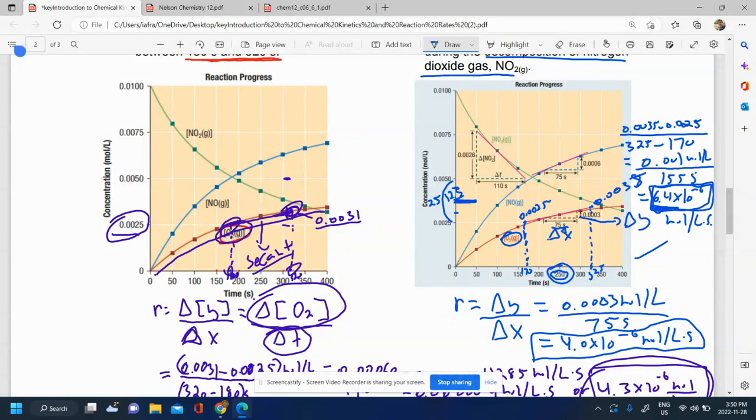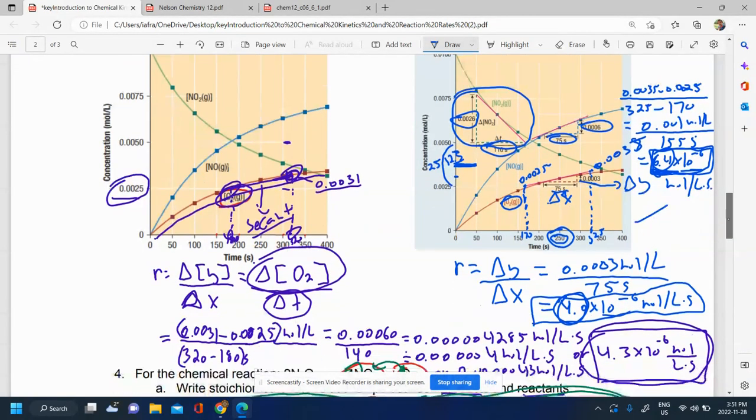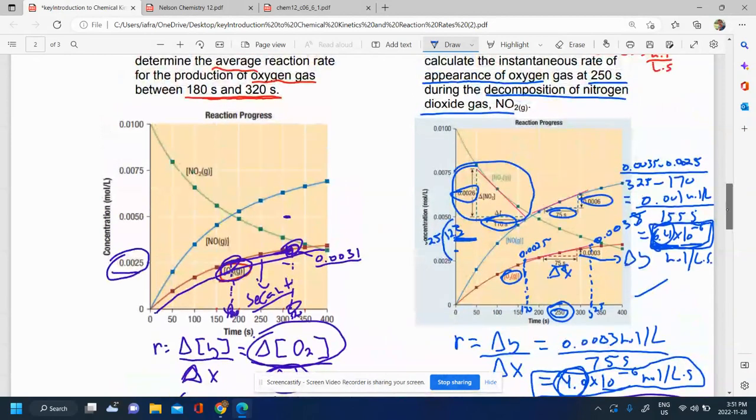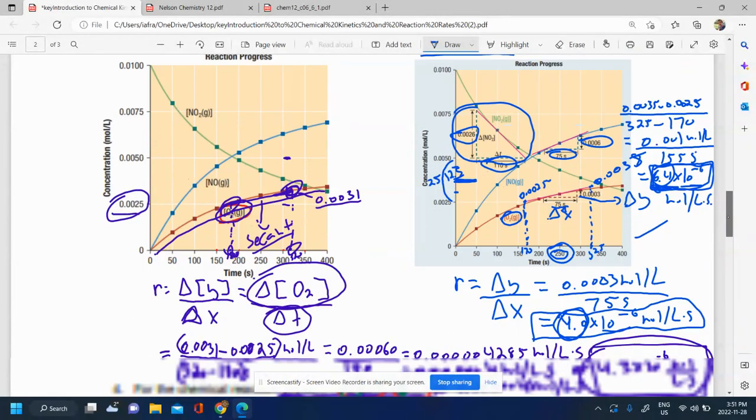At this specific point here for oxygen, you can try that out for a variety of other ones. See how your estimate compares with what's given in the textbook for your final answer. See if you can get closer and closer than I did. See what you would have estimated at those points and see if you get closer to the actual answer than I would. So now you know how to calculate the average rate of reaction and also the instantaneous rate of reaction.